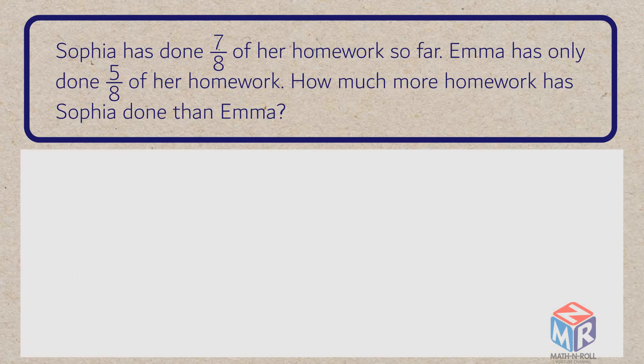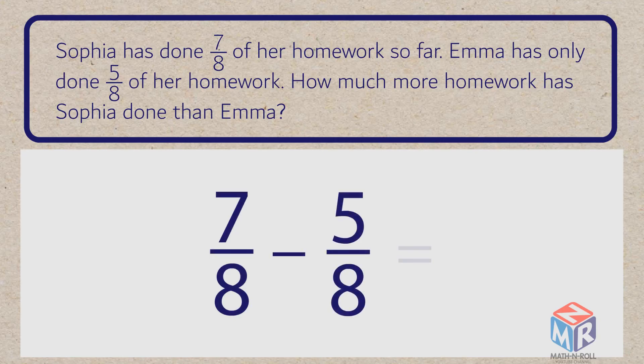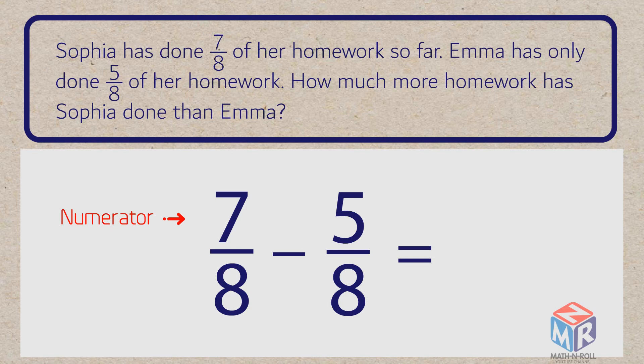To solve this problem, we need to write an equation. 7 eighths minus 5 eighths. The numerators are 7 and 5. These fractions have the same denominator. It's 8. To subtract fractions with like or same denominators,